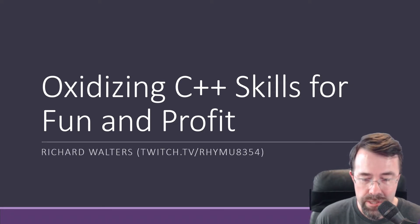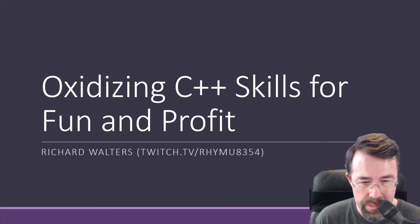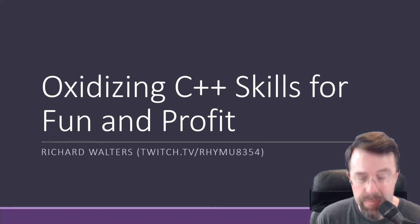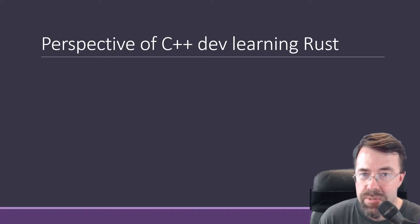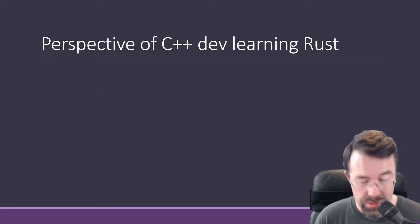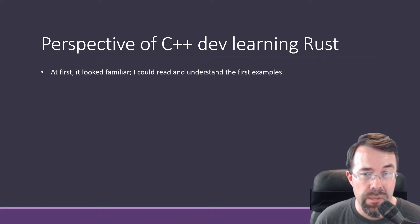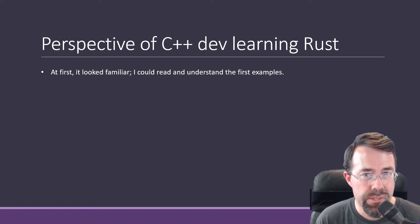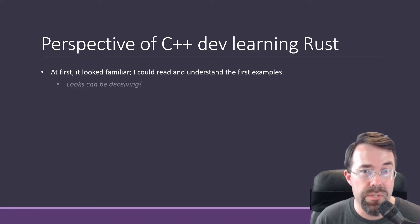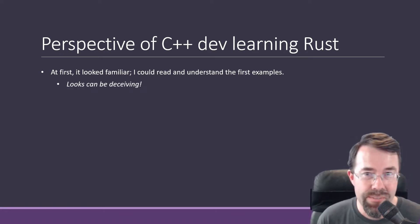What are the things that are recognized from C++, what things were different, what kind of stood out to me as important to learn, and what were some of the common mistakes that I made. My initial perspective learning Rust, which was only about a month and a half ago, was that it first looked pretty similar to what I already knew. I could read and understand the examples in the first few chapters of the Rust book, but looks can be deceiving.